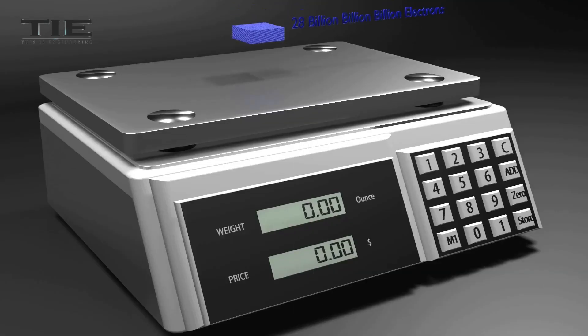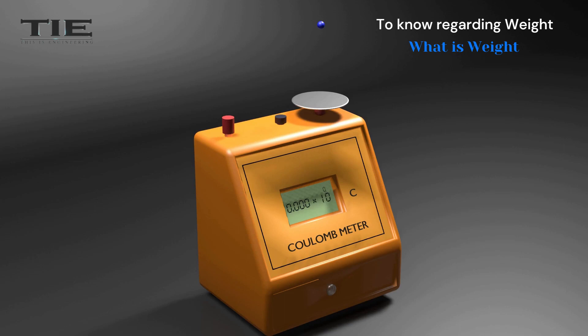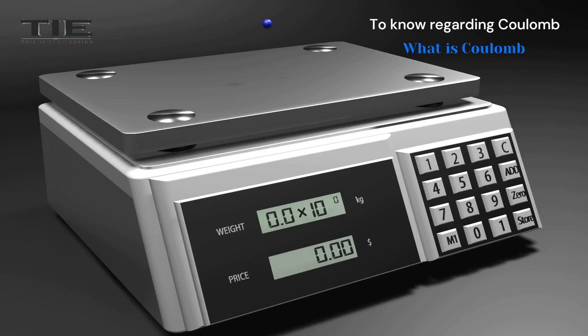It takes more than 28 billion billion billion electrons to weigh one ounce. The charge on one electron is 1.602 × 10^-19 Coulombs. The mass of one electron is 9.0 × 10^-31 kilograms.